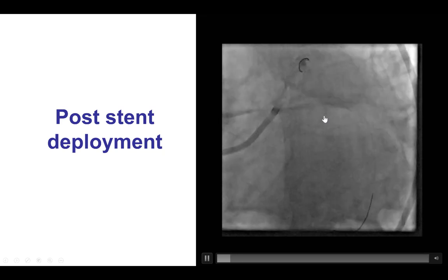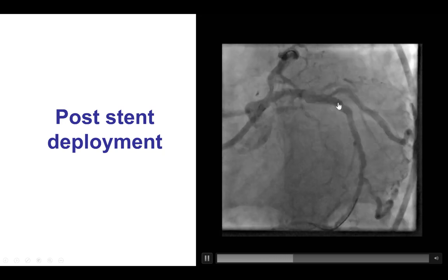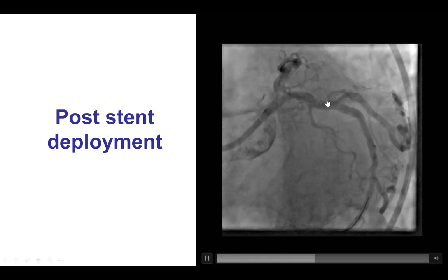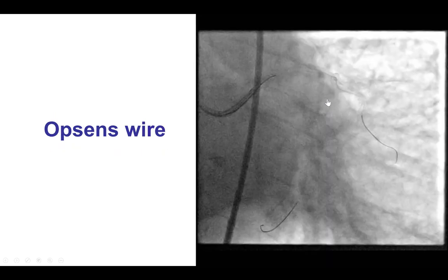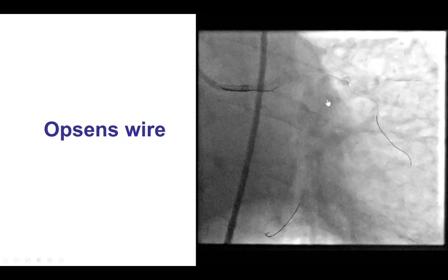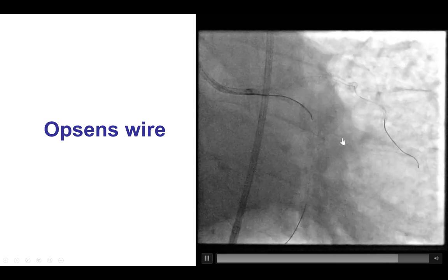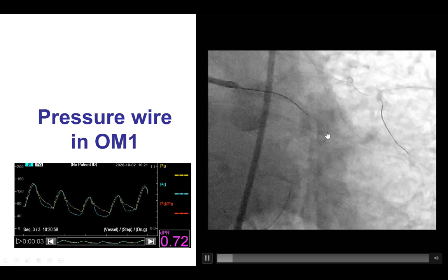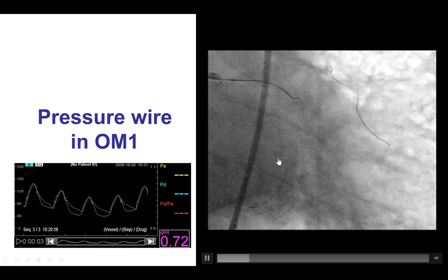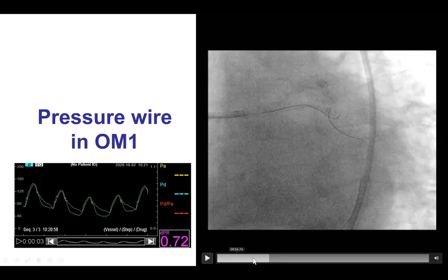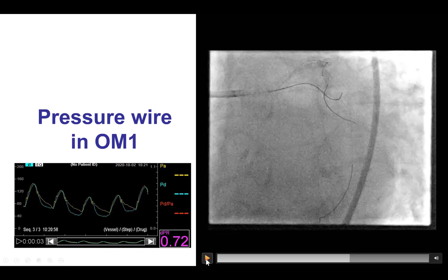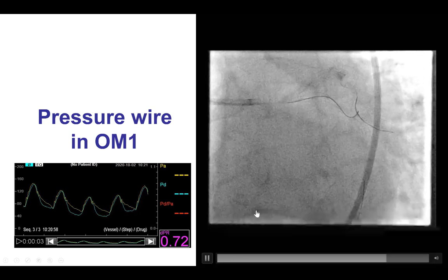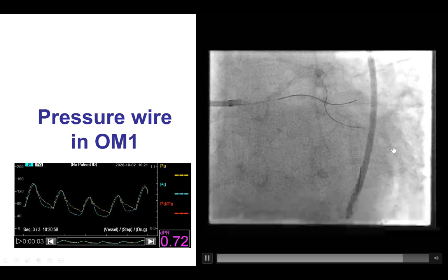After the stent was placed, the result into the circumflex seems to be okay. However, there is some pinching of the ostium of the obtuse marginal branch. Whether this is significant can be challenging to tell by angiography alone, so a pressure wire was used to determine if there is significant disease at the ostium. An Optis wire was advanced into the obtuse marginal branch — sometimes difficult given that the side branch is jailed, but eventually successful. The DPR was 0.72, meaning the resting ischemic index is in the ischemic range, confirming significant pinching of the ostium of the obtuse marginal branch.